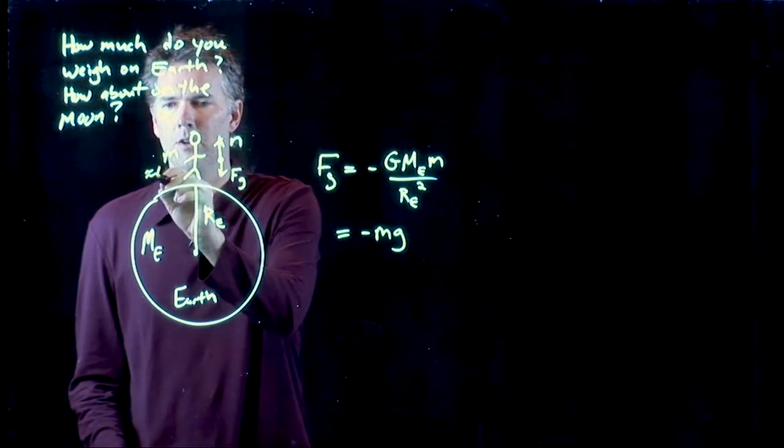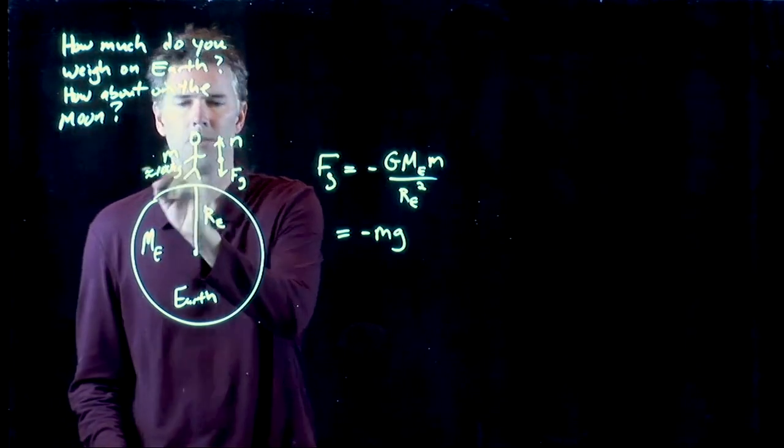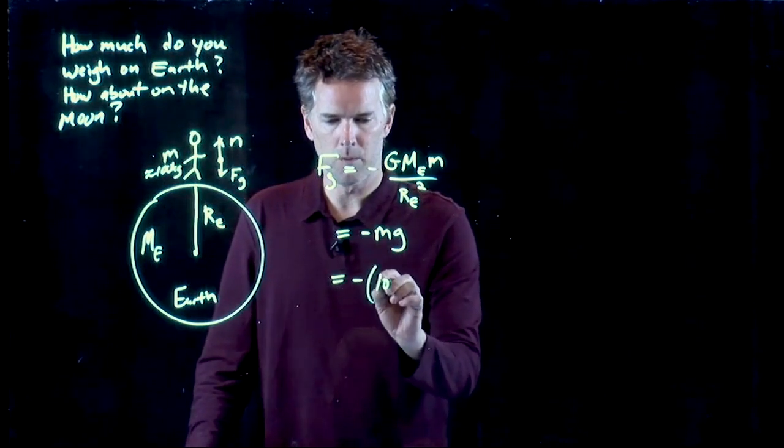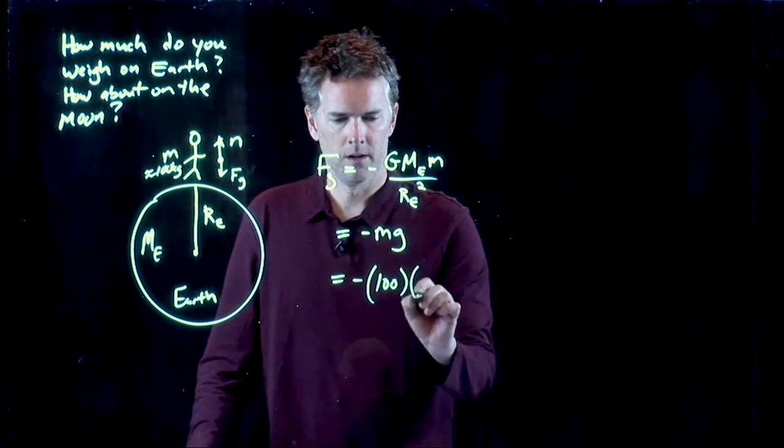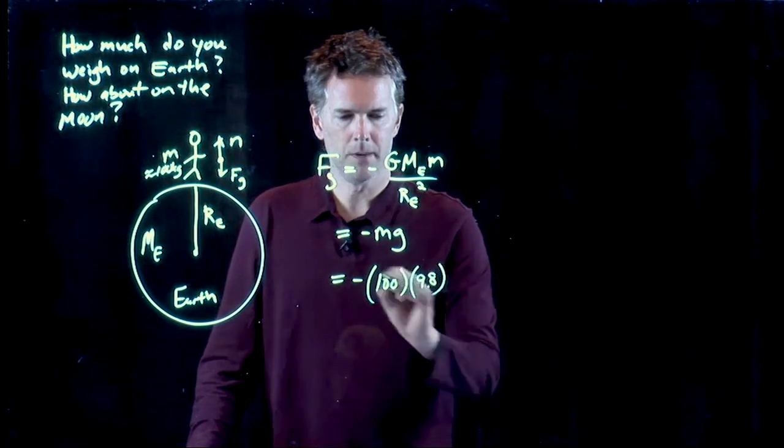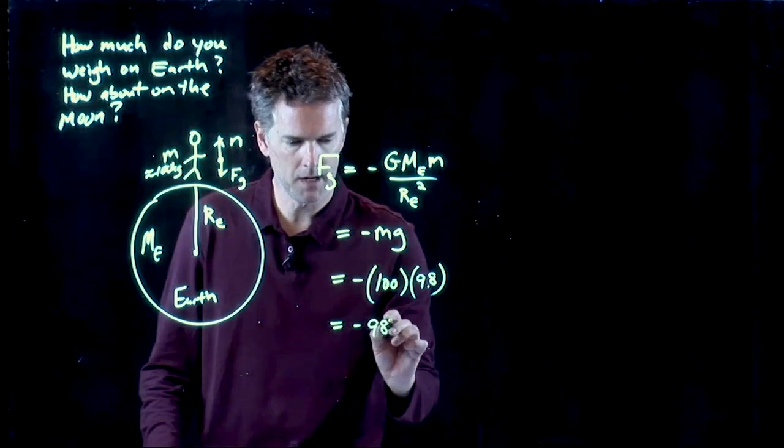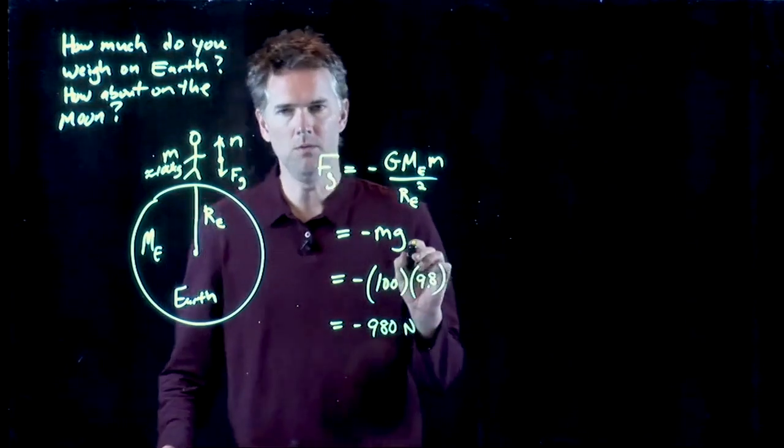So let's say that the mass of u is 100 kilograms. Let's see what this number is then. We get 100 kilograms times 9.8 meters per second squared, all in SI units. We get 980 Newtons.